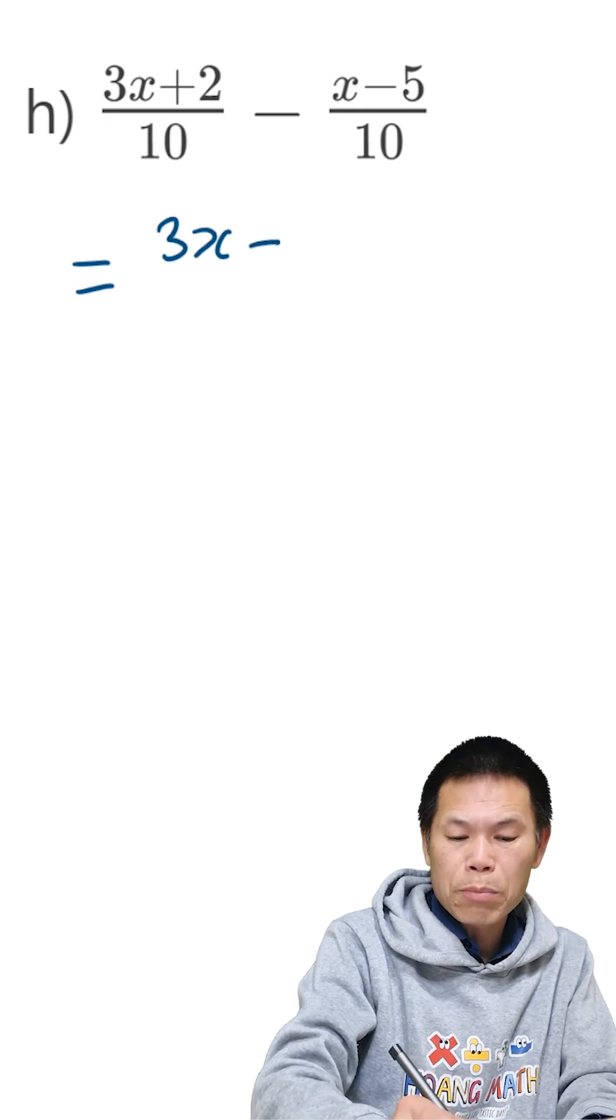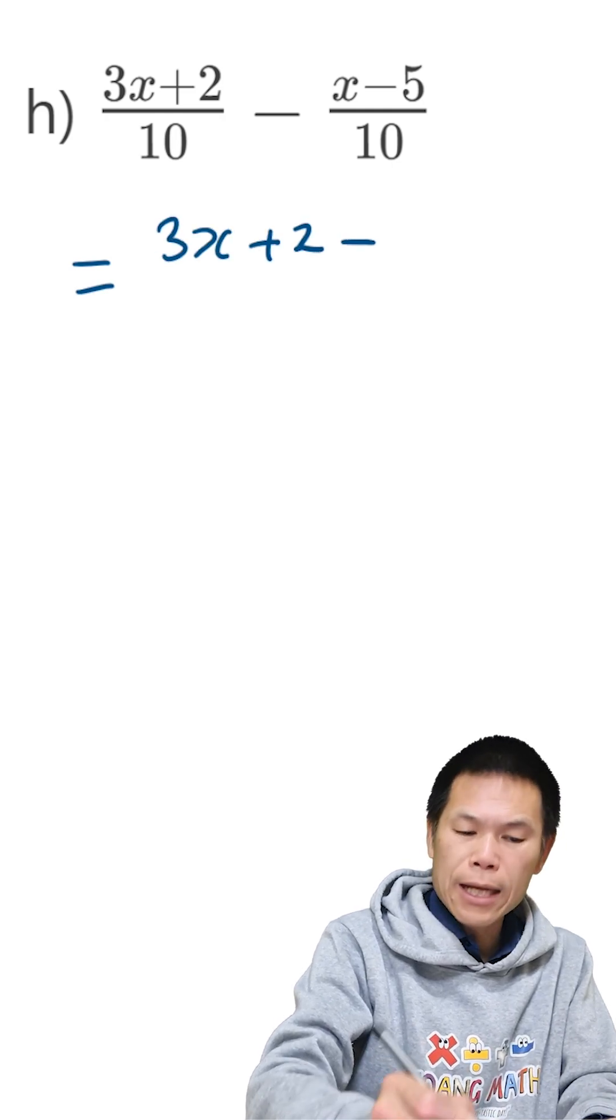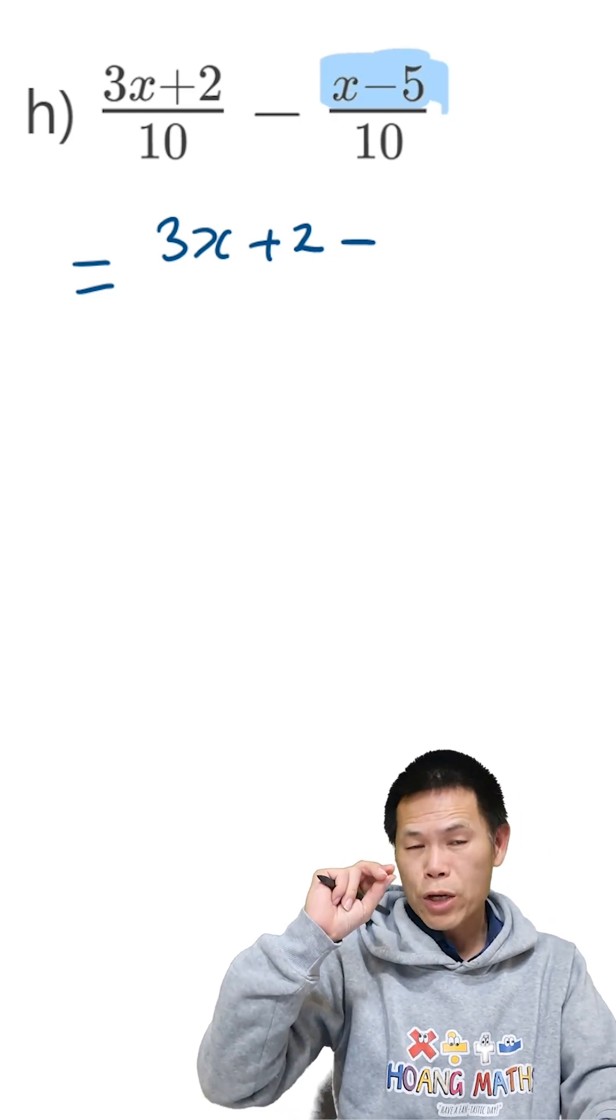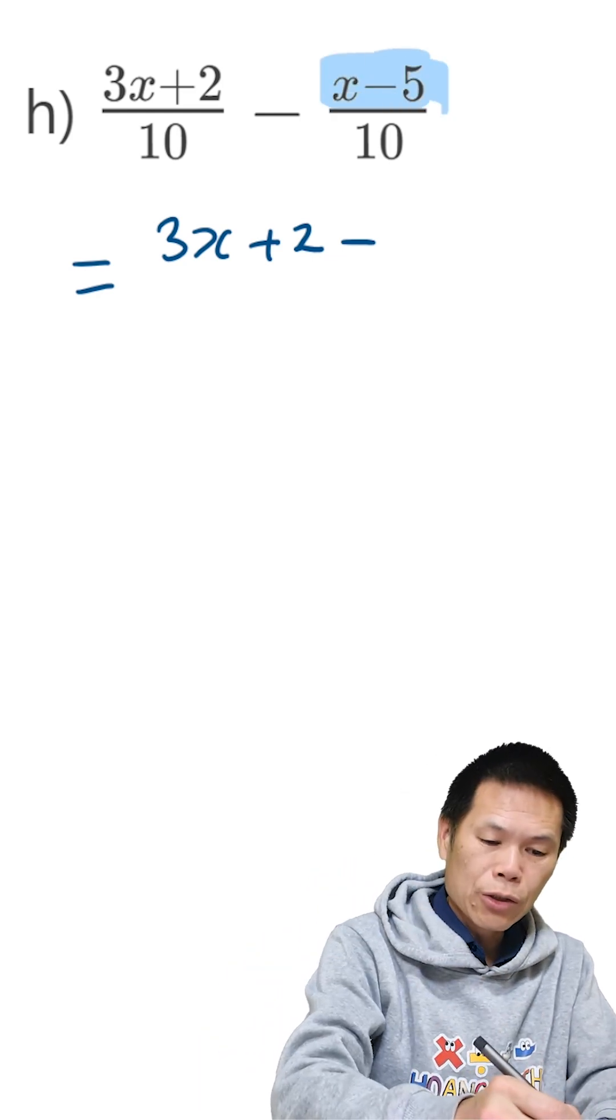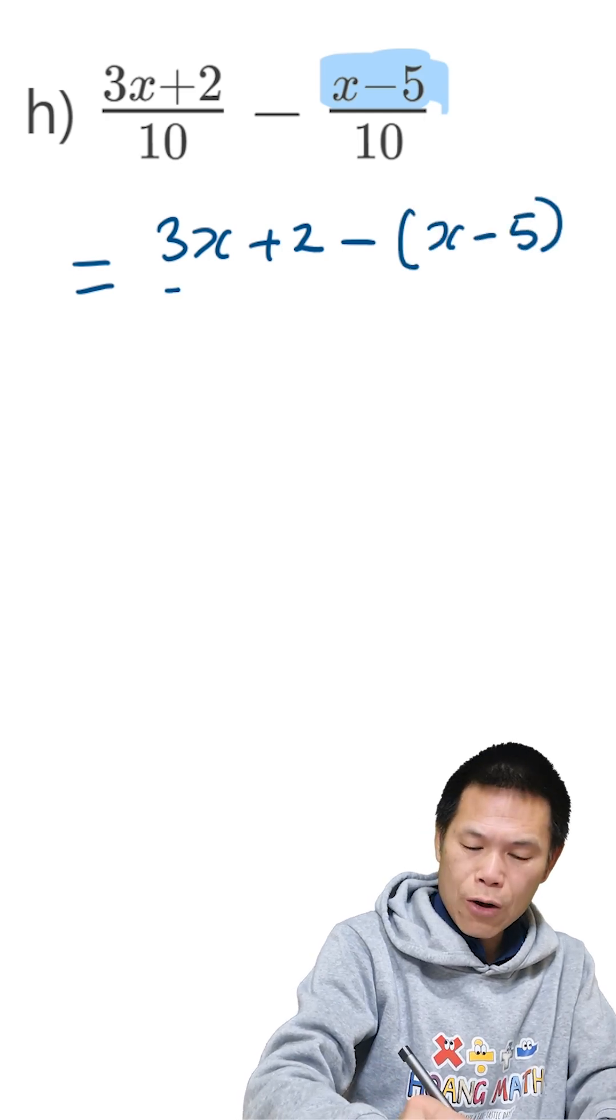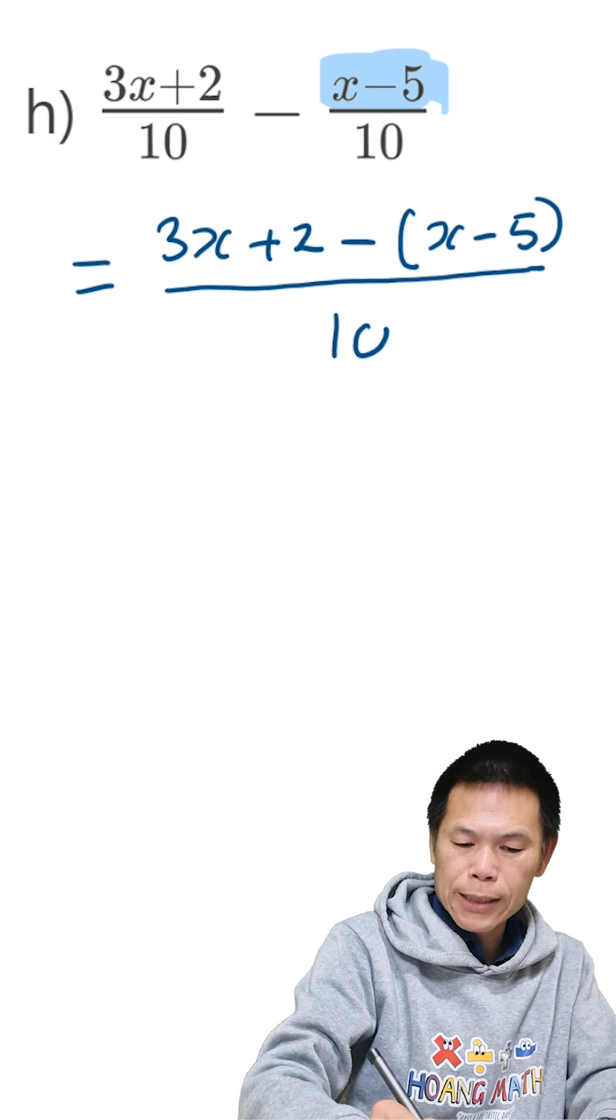So we have 3x plus 2, we minus... do not forget, we minus the whole lot, so therefore we need to bracket it. Okay? So that is bracket x minus 5 over 10.